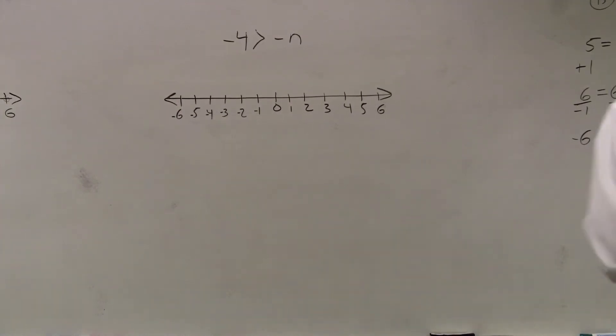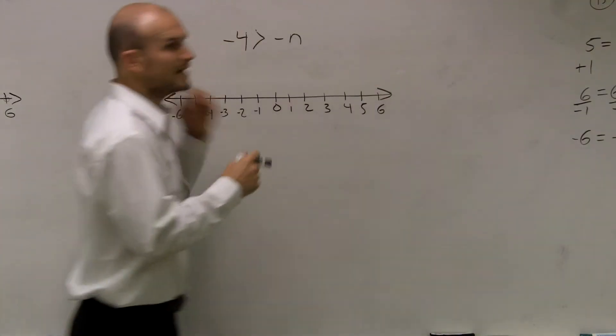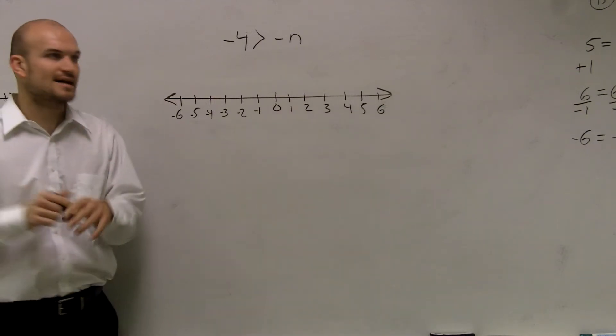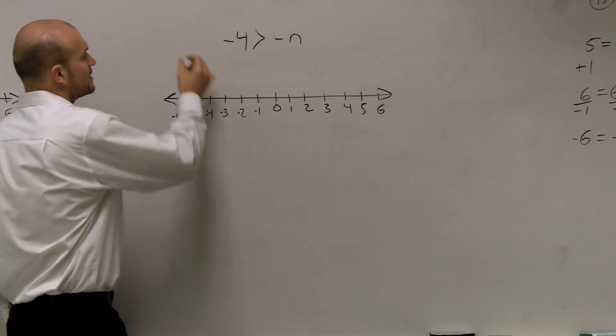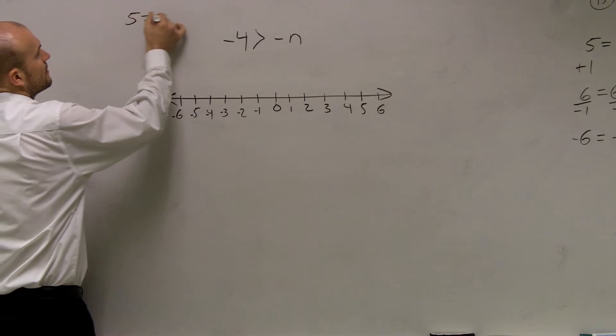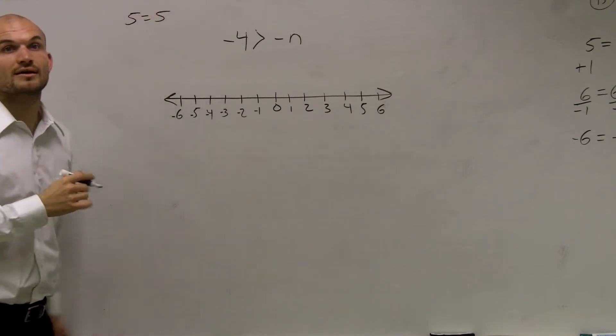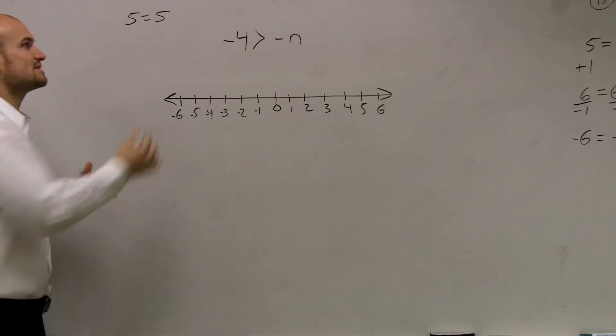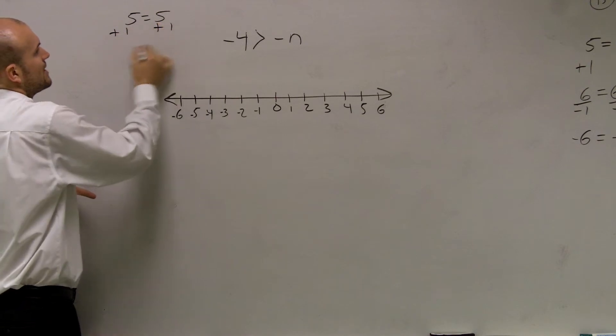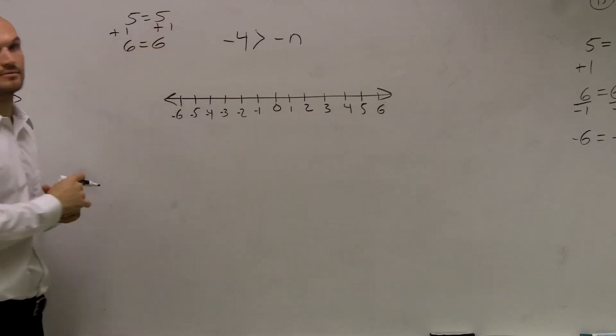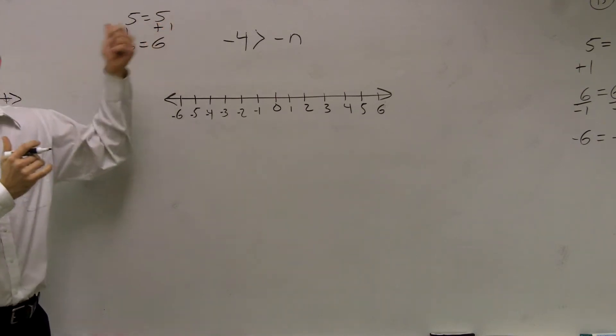This one's very similar to the one I just explained. I'll do the run-through one more time. If you guys remember, when we have equations like 5 equals 5, as long as I do the same thing to both sides, my equation is still true. If I add 1 on both sides, it's still true.